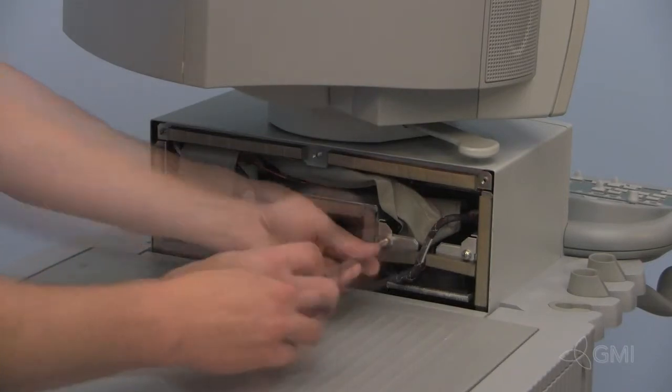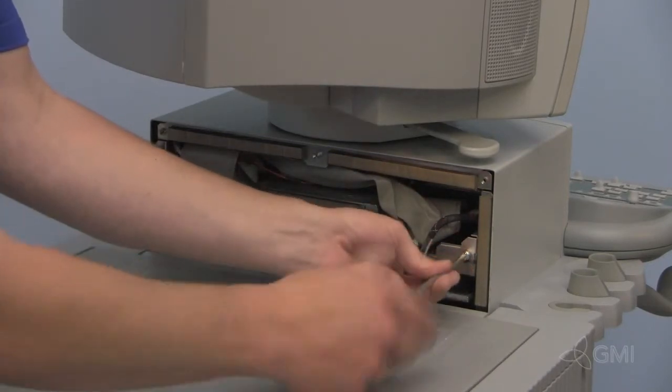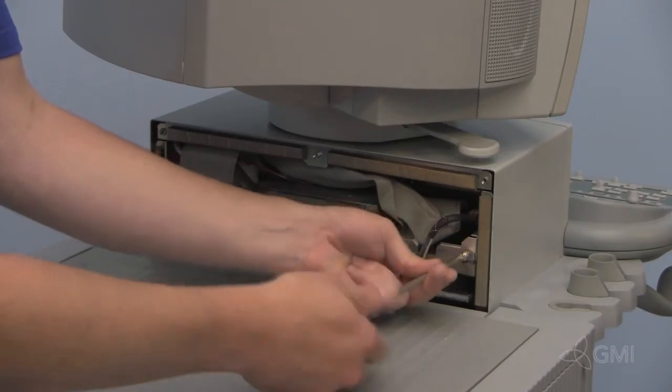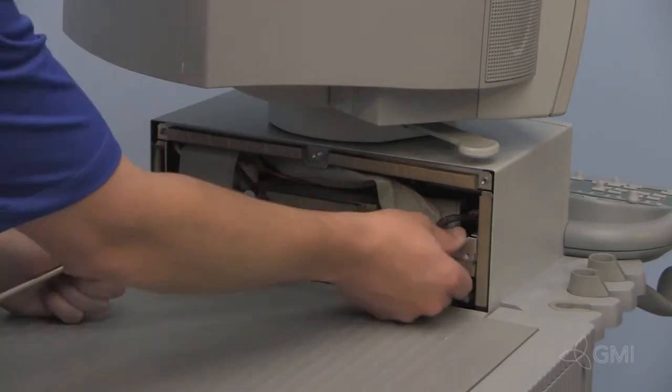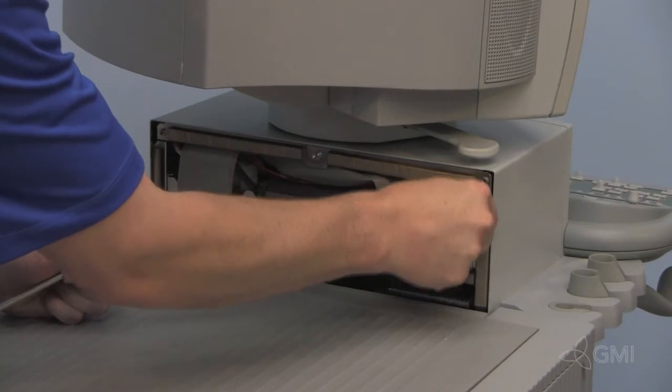Remove the two screws securing the hard drive assembly. Remove the SCSI cable and the power cable.